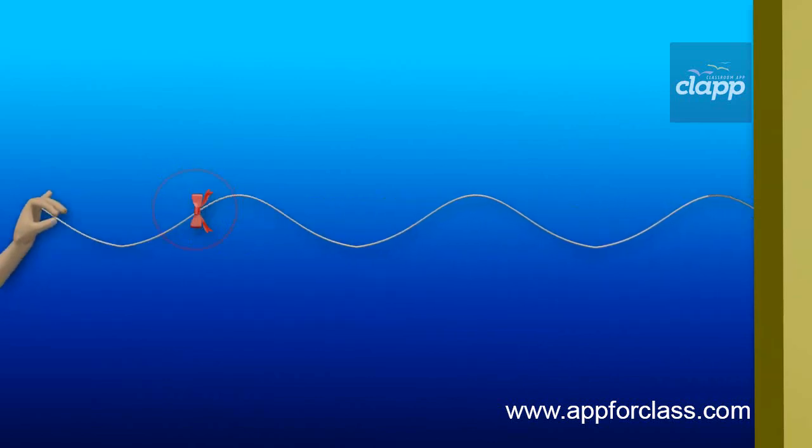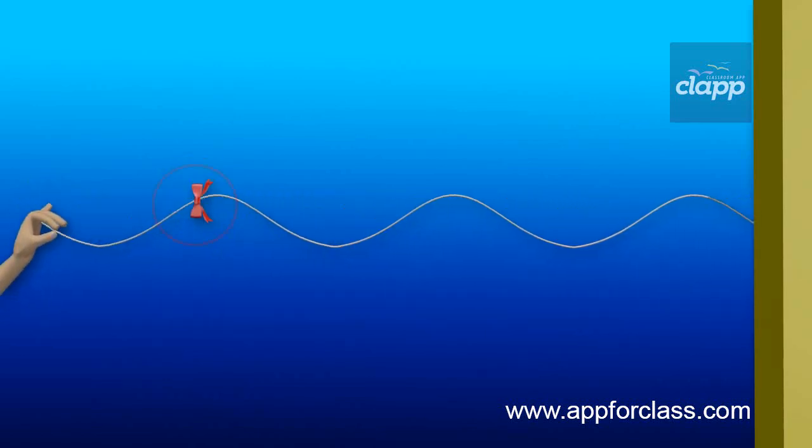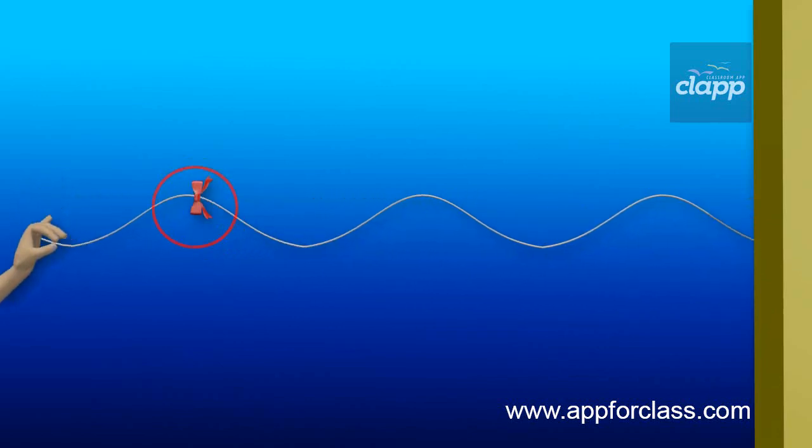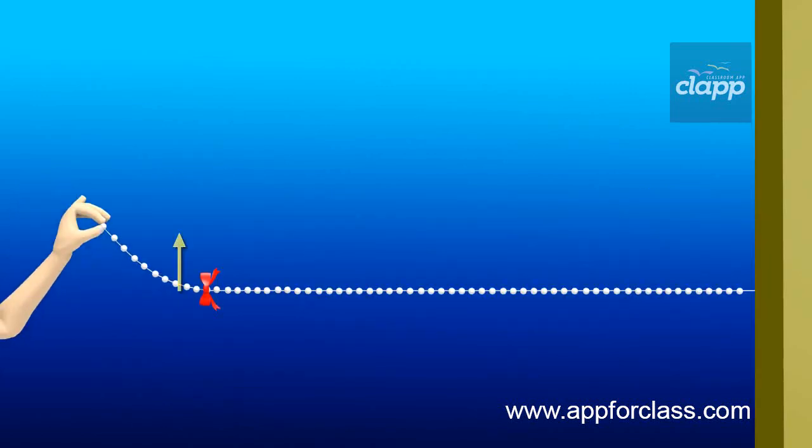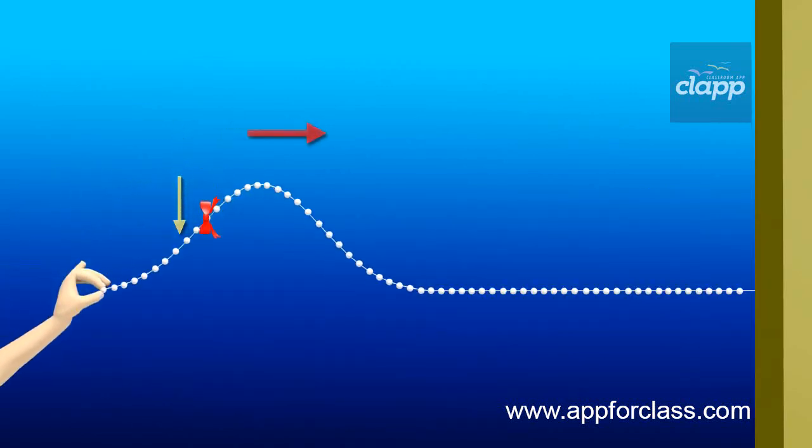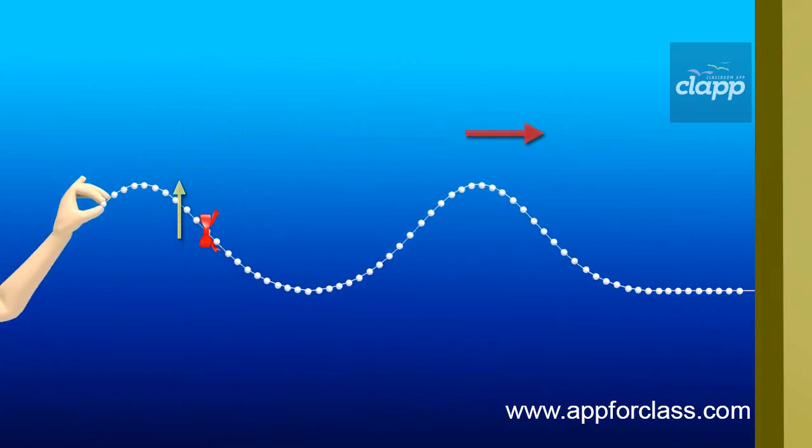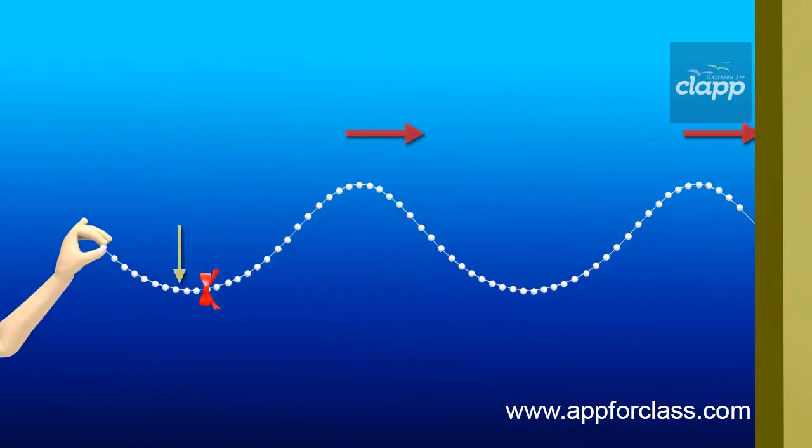The ribbon is vibrating in a direction perpendicular to the direction of propagation of the wave. That is, each particle of the rope vibrates in a direction perpendicular to the direction of propagation of the wave.